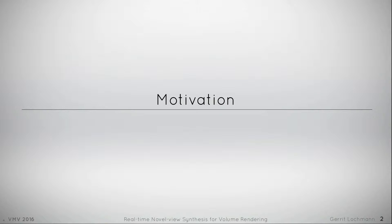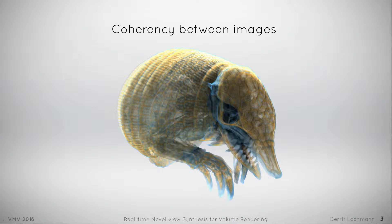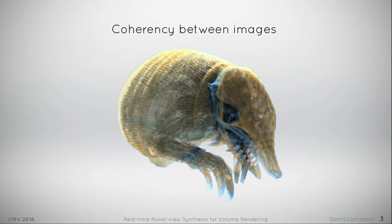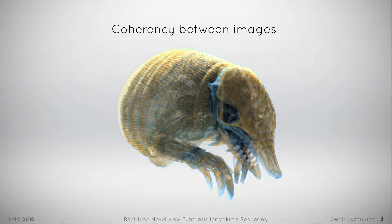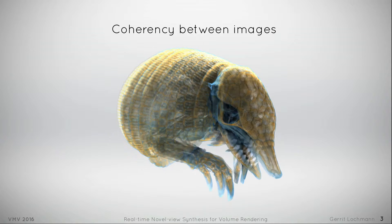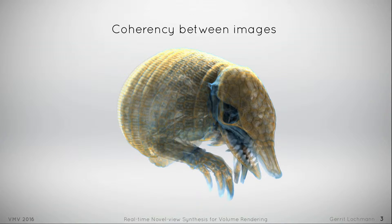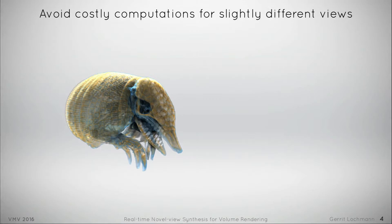Let's begin with one observation. When we look at two images of this armadillo, we observe that they visually do not differ a lot when we slightly change the view. But in common rendering applications, both images would be generated as independently computed frames, although images are coherent in terms of illumination and geometry. The question is, how can we benefit from this fact?